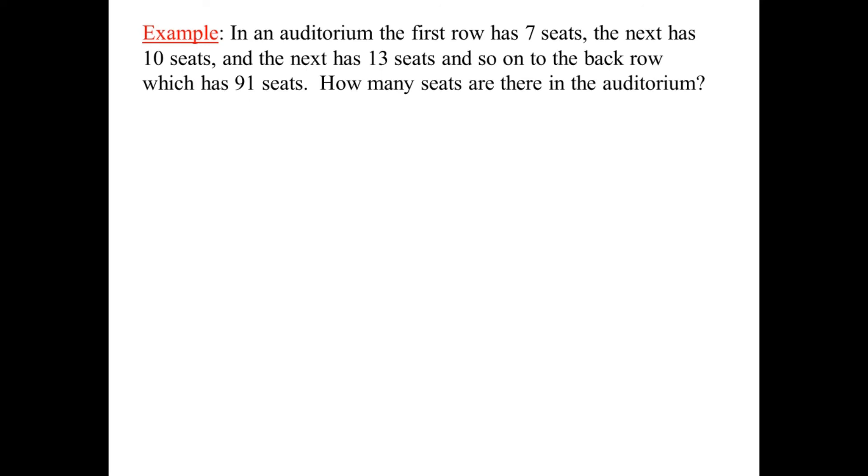These two formulas for arithmetic sequences and series are like teammates. If the game was volleyball, this would be the setter and this would be the spiker. This set up D and this used D to give us the answer. Let's do three more examples. Oh, word problem. In an auditorium, the first row has seven seats. The next, like that's right in front of the stage. The first row has seven seats. The next row behind that's a little wider. It has 10 seats. Then the next row has 13 seats and so on until the back row has 91 seats.